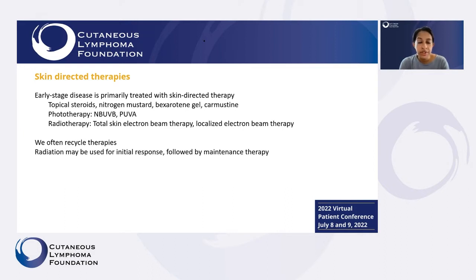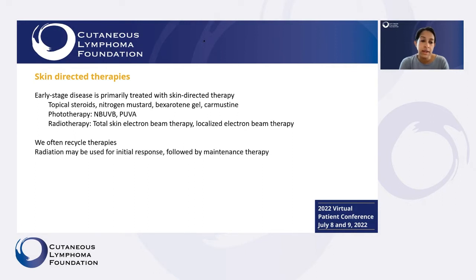With regard to skin-directed therapies, this is what we use for very early stage disease, especially patients who have limited areas of involvement. We can think of these in different categories: topical treatments like topical steroids or other creams; phototherapy; and radiation therapy. Patients can have either total skin electron beam, which is a low dose of radiation to the whole skin, or localized radiation to tumors that are bothersome. We often recycle treatments or use them in combinations — sometimes we use radiation up front to get some initial clearing, and then use other therapies for maintenance.